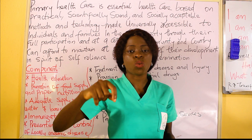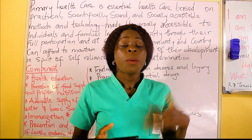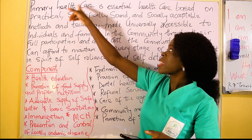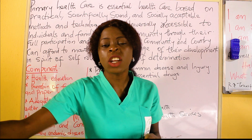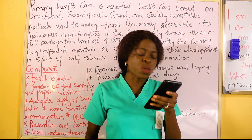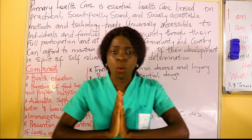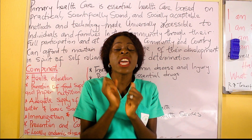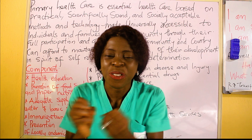Another principle is provision of quality, basic, essential care and social mobilization — sensitizing people through health education, mobilizing them, and telling them what to do. Then affordability and accessibility: people should be able to afford and access the health care. If you notice, these principles are all derived from the WHO definition of primary health care. If you can define primary health care according to WHO, you should be able to derive the principles from that definition with ease.